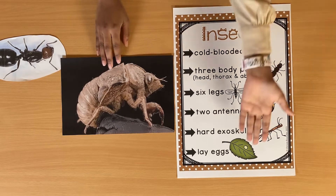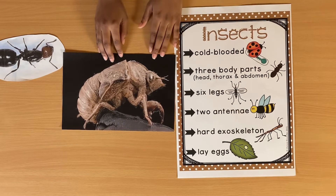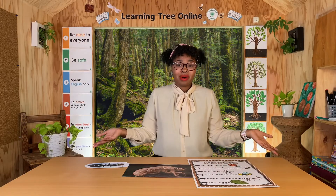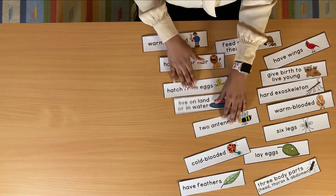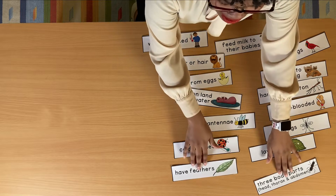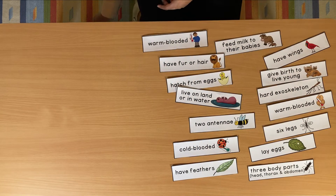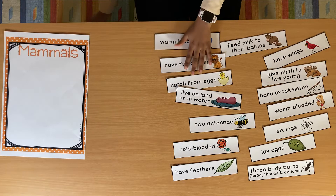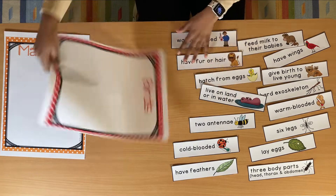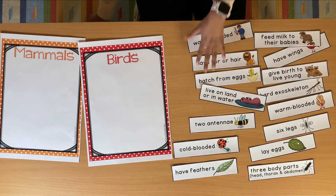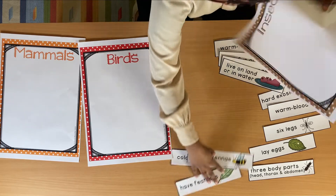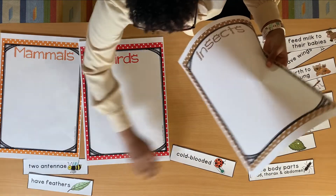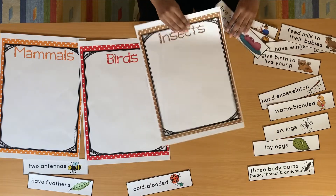Insects also lay eggs. We've learned a lot about these three classifications — can we remember? Is it about a mammal, an insect, or a bird? So we have mammal, bird, and insect.